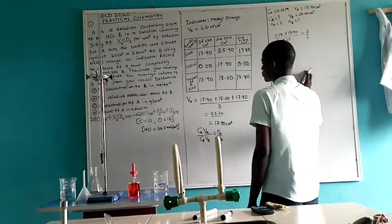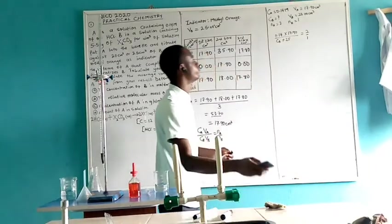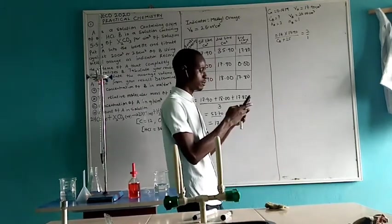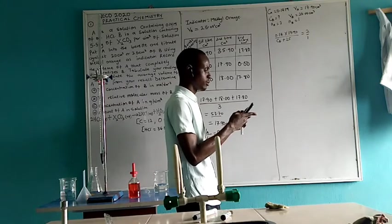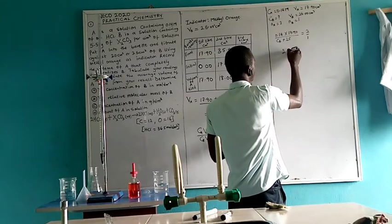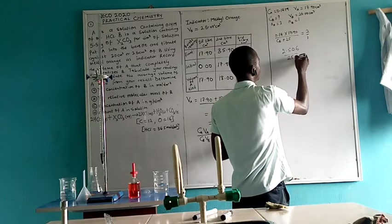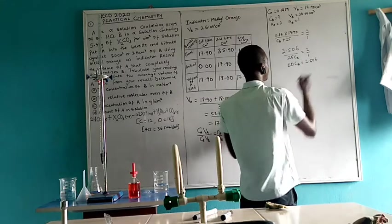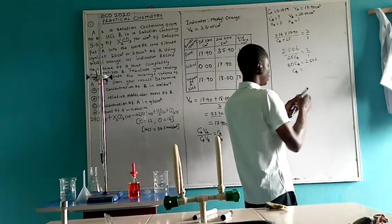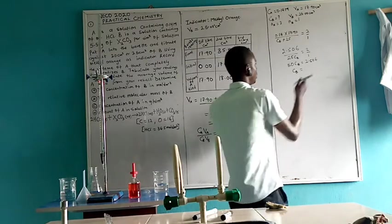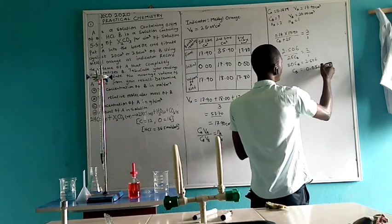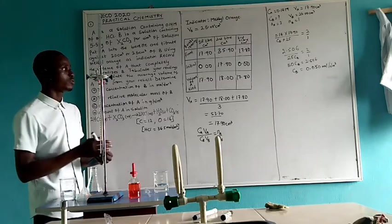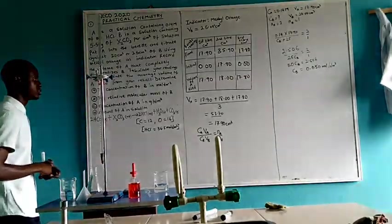CA is 0.14 times VA, 17.90, all over CB times 25, equals 2 over 1. When we multiply, we have 0.14 times 17.90, that gives me 2.506, all over 25 CB equals 2 over 1. Multiplying, we have 50 CB equals 2.506. Dividing both sides by 50, this means 0.050 moles per dm³. This is the concentration of the base. I have standardized the base with this.